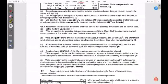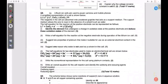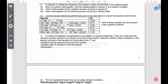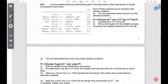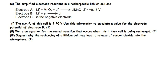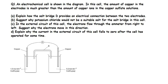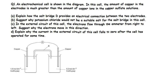All of them have been answered in this video, up to 19 questions actually. Let me take you over all of them. Let's get started. An electrochemical cell is shown in the diagram. In this cell, the amount of copper in the electrodes is much greater than the amount of copper ions in the copper sulfate solution.